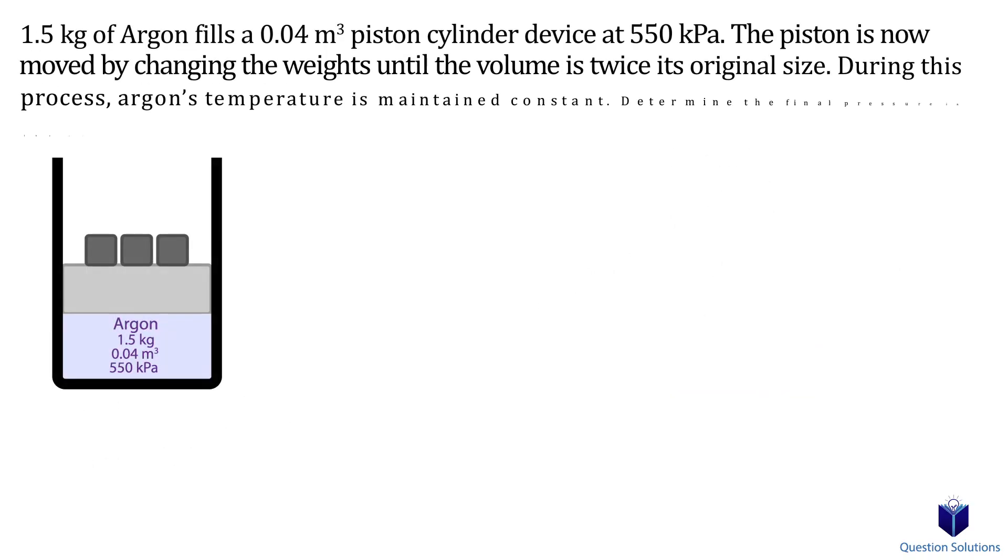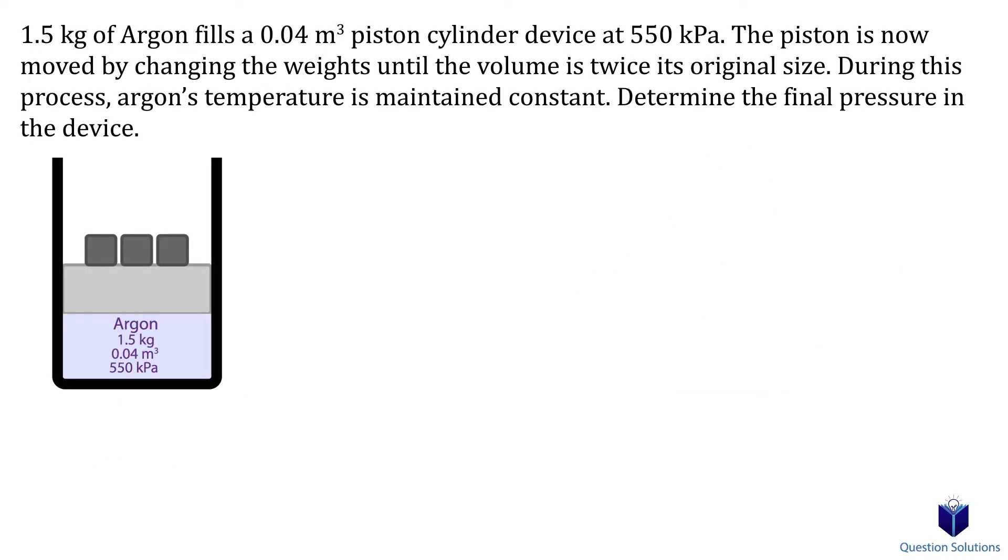Let's take a look at one last example. We have a container filled with argon, and on top, we have a piston. When we remove the weights, the piston moves up, and the volume is now twice the original size. We need to figure out the final pressure. Let's write down what we know.